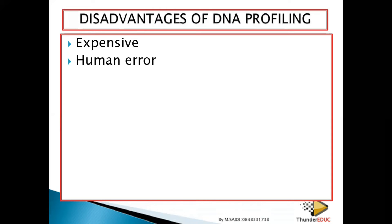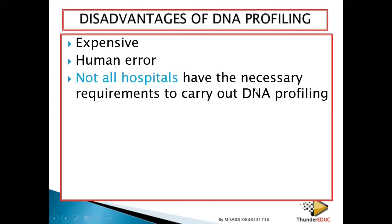You have to use a large sample size and repeat the technique to show that what you got is what another person will also get — that means human errors have been minimized. Number three: not all hospitals have the necessary requirements to carry out DNA profiling. Just like schools, some hospitals are well-equipped with chemicals and instruments, while others are struggling. Some hospitals have equipment but lack the chemicals needed, so they cannot carry out this DNA profiling.